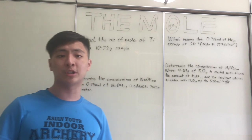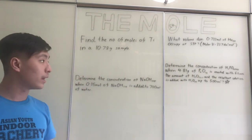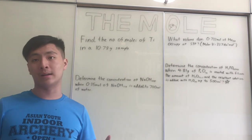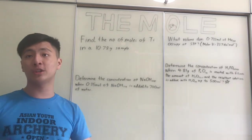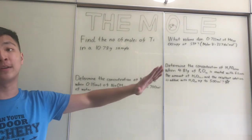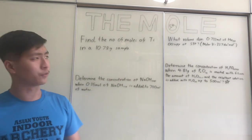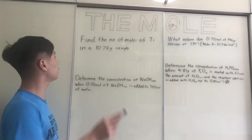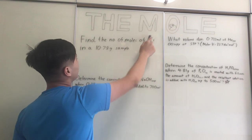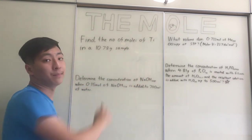I want you to pause the video and try to do the questions on your own. Once you're finished, or if you get stuck, continue watching as I walk through them. So we'll go to the first question: find the number of moles of Ti (titanium) in a 10.78 gram sample.